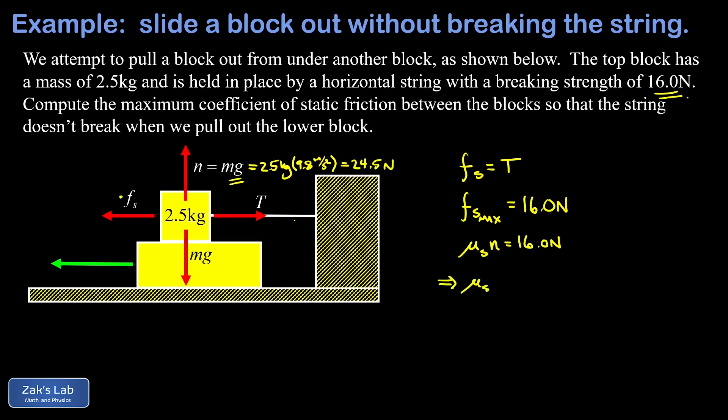And we get that μ_s times 24.5 newtons is equal to 16.0 newtons. We're going to keep three significant digits on our final answer for μ_s. That's 16 divided by 24.5, and we get 0.653